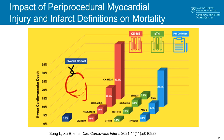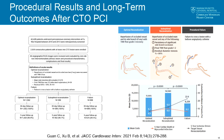Looking at three definitions — the Fourth Universal Definition of MI, the Academic Research Consortium definition, and the SCAI definition — only the SCAI definition was associated with five-year cardiovascular death. So if we are doing these trials, the MI definition should really be CK-MB greater than five times normal or the SCAI definition.